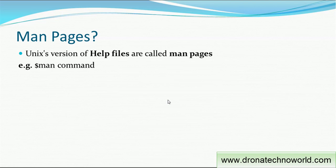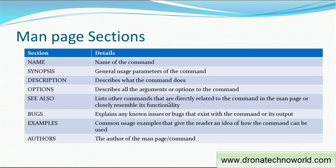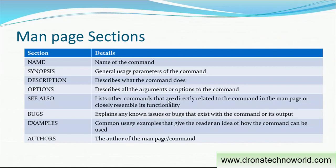The man page will give you information containing the name of the command, the synopsis which gives the general usage and parameters, a description of how to use it, and other related properties. We also get the options section which describes all the arguments or options with the command — some are mandatory and some are optional. If there are related commands, those are mentioned in the 'see also' section.